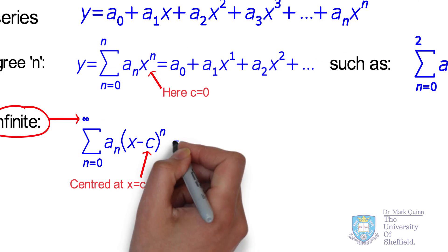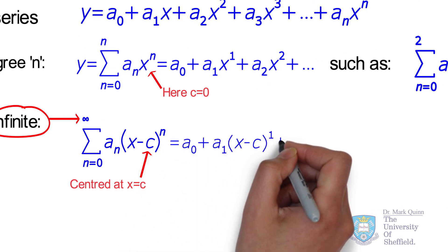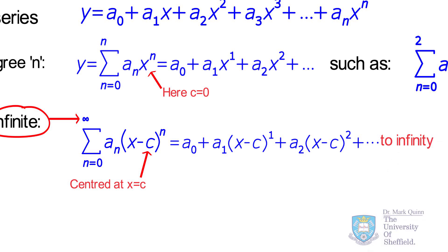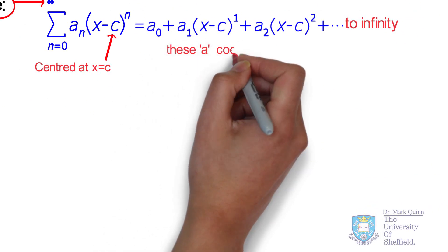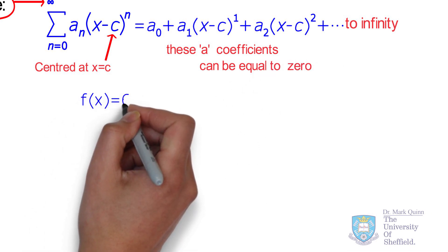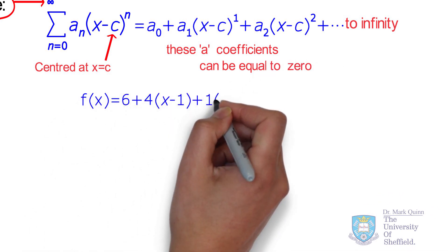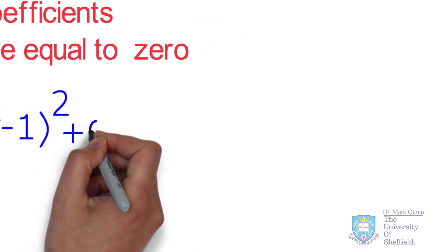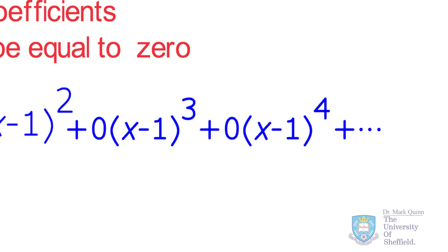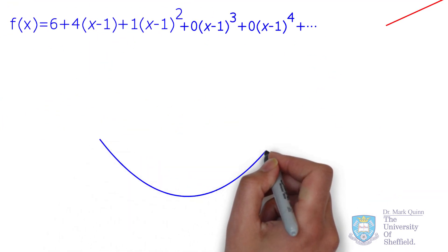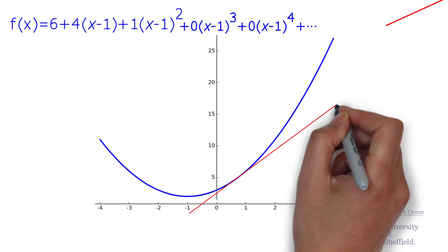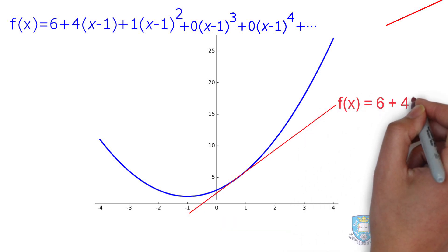If we expand out this summation, we can see that the series starts at a0 and expands with increasing powers of x. This extends from n equal to 0 all the way to n equal to infinity. Our original polynomial function of 3 plus 2x plus x squared could be represented by a power series of 6 plus 4 times (x minus 1) plus (x minus 1) squared and so on. While the power series has indeed infinite terms, most of these terms can be zero.